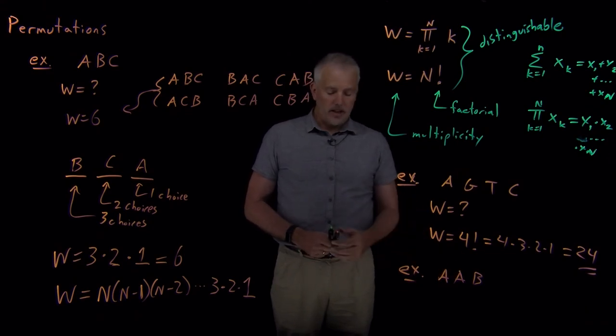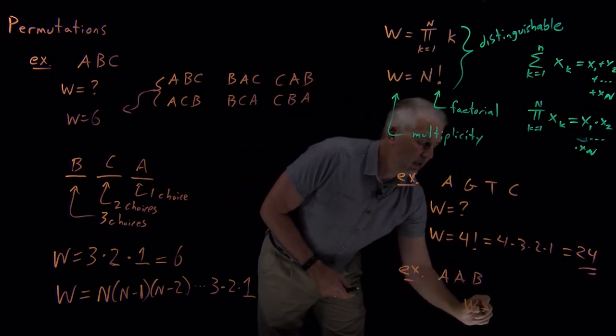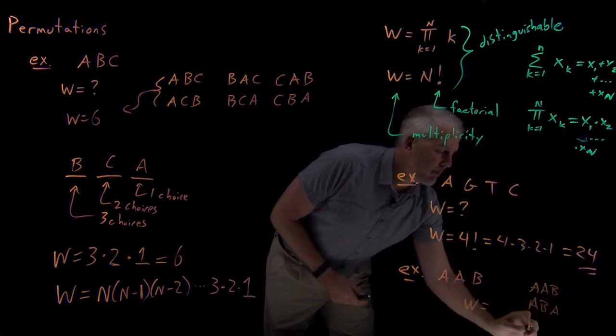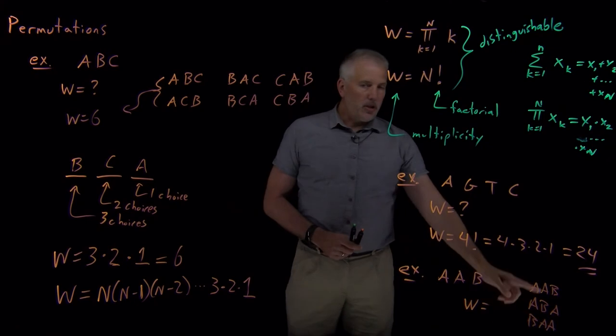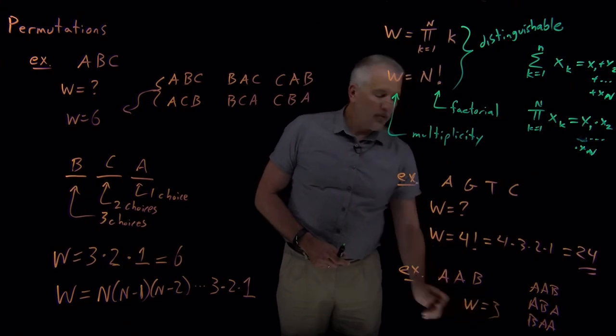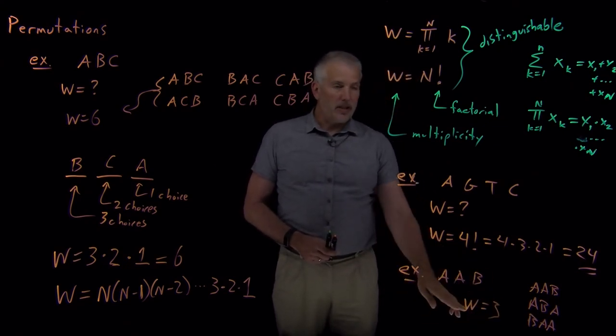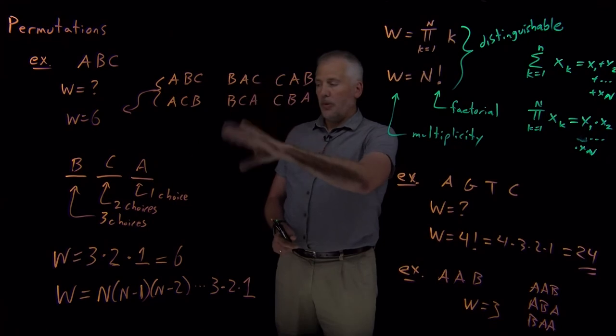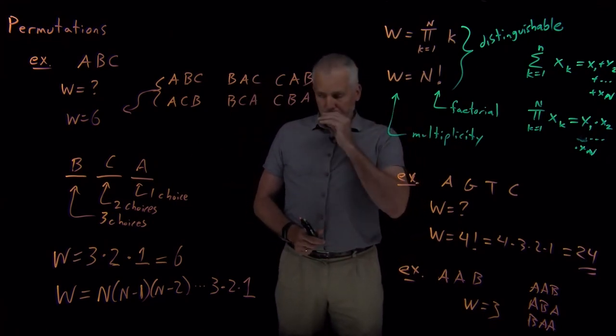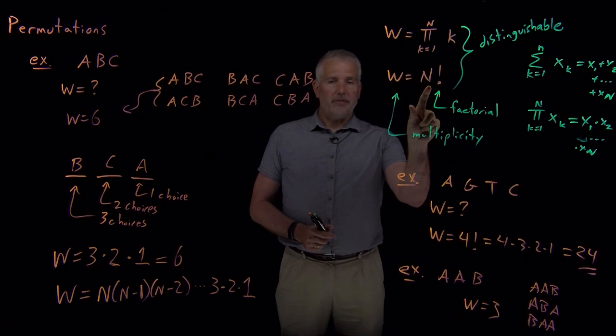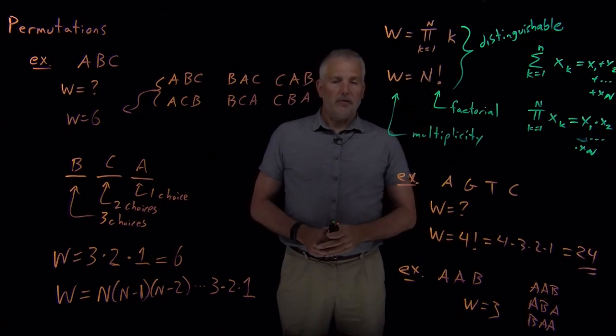There's not six different ways of arranging these letters. I can write AAB or I could write ABA or I could write BAA. Those are the only choices. If I try to write anything else down, I've written down one of the ones that I've already written. There's only three different ways of arranging those objects and I don't get the same answer of six because the two A's are identical to one another. What we've learned so far only works for distinguishable objects. If I have N distinguishable objects, then the number of permutations of those objects is N factorial. The next video lecture will cover how to deal with problems where some of those objects are not distinguishable from one another.